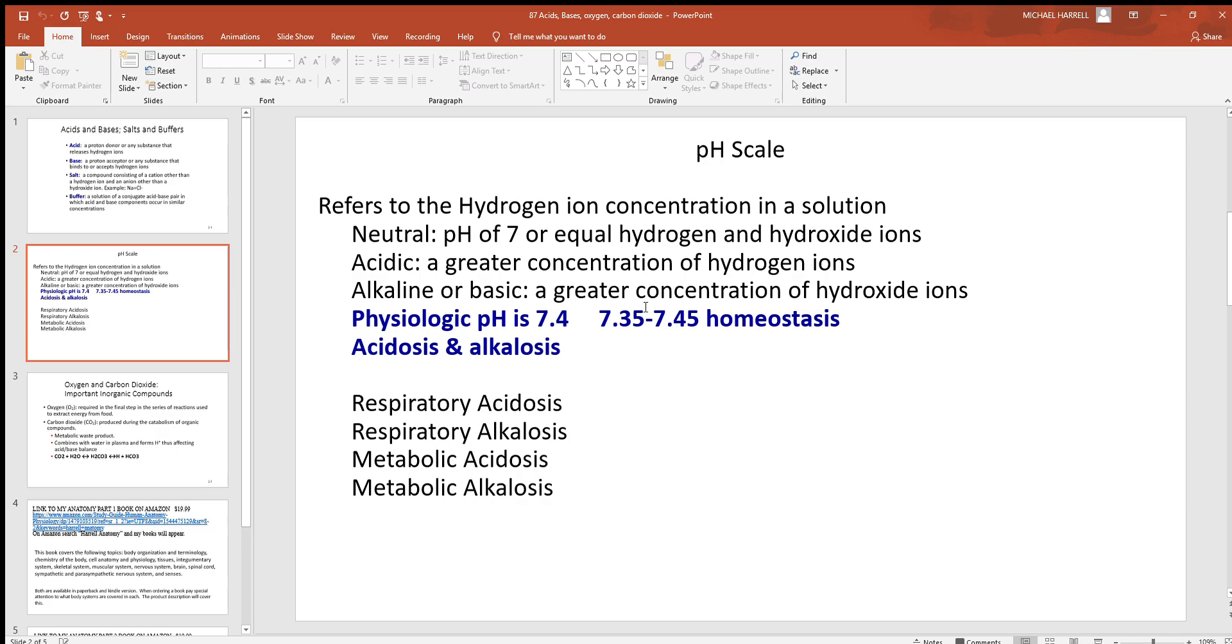There's our ideal pH number inside the human body. So notice that's only a 0.05 deviation in either direction. The body is very, very particular about the pH inside of it, and also body temperature. Those are the two most important variables of homeostasis, which we've discussed before.